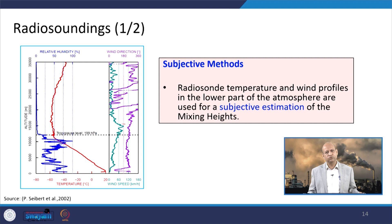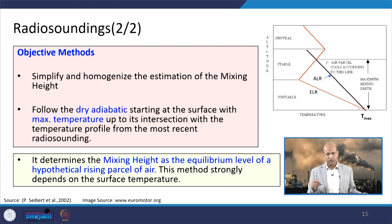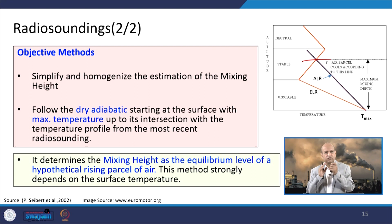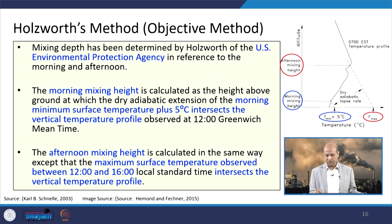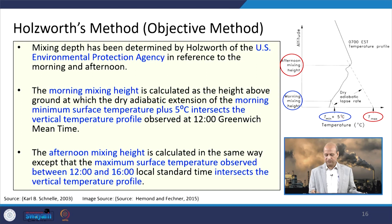The objective method plots the profile and intersects the adiabatic lapse rate from the maximum temperature observed during that observation, determining the maximum mixing height at that intersection point. The Holsworth method is also an objective method giving morning and afternoon mixing heights: morning mixing height uses the dry adiabatic lapse rate from T-minimum plus 5°C, and afternoon mixing height uses the dry adiabatic lapse rate from T-maximum.